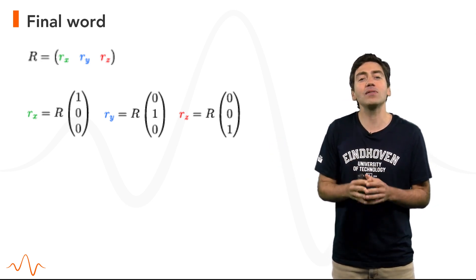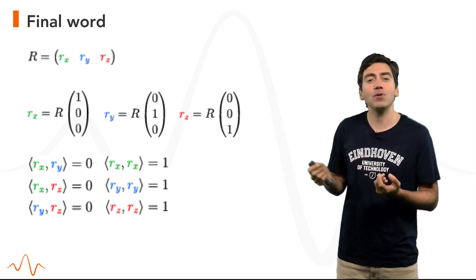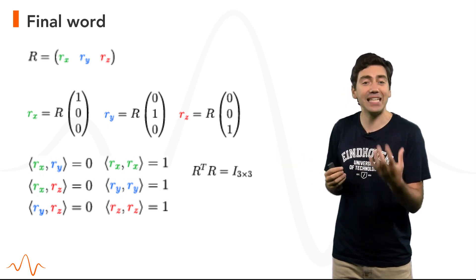This means that all the columns of this rotation matrix are orthogonal. This implies that if we multiply the original matrix transposed by the original matrix, we obtain the identity matrix.